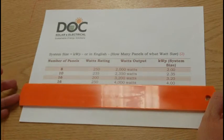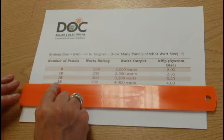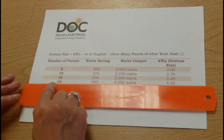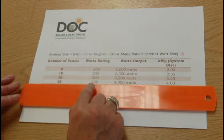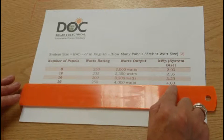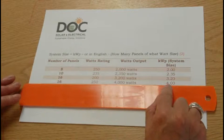A 4 kilowatt system can be calculated by having 16 panels of 250 watts times 16 by 250 will give you 4,000 watts, or 4 kilowatts peak.